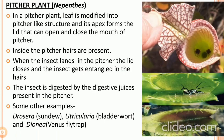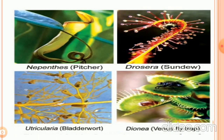They are called partial heterotrophs because they can synthesize their own food but fulfill their nitrogen deficiency by eating insects. One example is pitcher plant, Nepenthes. In a pitcher plant, the leaf is modified into a pitcher-like structure, and its apex forms a lid that can open and close. Inside, hairs are present; when an insect lands in the pitcher, the lid closes and the insect gets entangled in the hairs and is digested by digestive juices. The only species found in India is Nepenthes khasiana, found in Meghalaya. Other examples include sundew, bladderwort, and Venus flytrap.